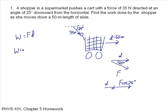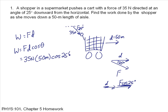In a more general sense, work is Fd times cosine of the angle theta. So I can just plug in: 35 newtons times 50 meters times cosine of 25 degrees, and I get 1600 joules.